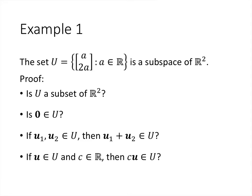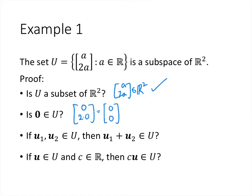First, is it a subset? That's clear — any vector that looks like (a, 2a) is certainly an element of R2, so U is a subset. Is the zero vector in U? Yes, because we can let a equal zero, giving the vector (0, 2·0) = (0, 0), which is the zero vector, and that's in capital U.